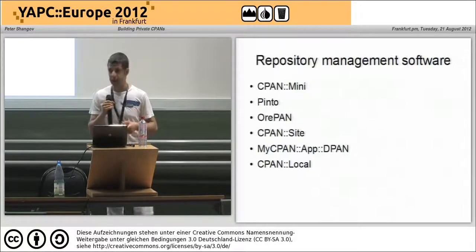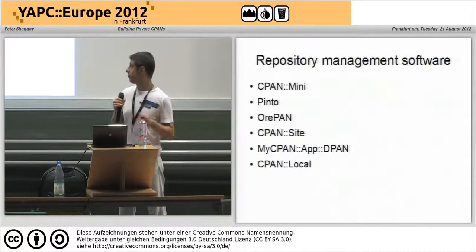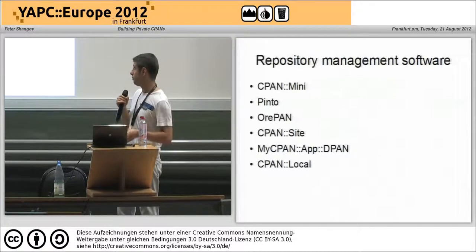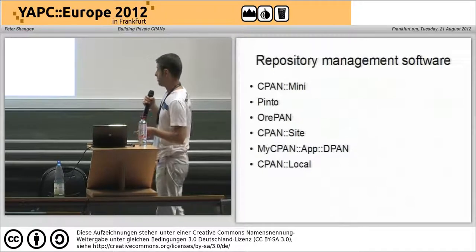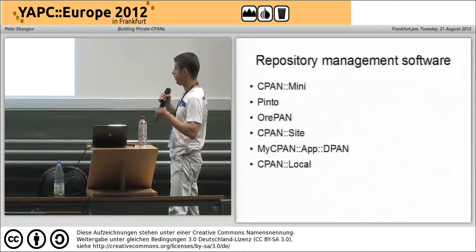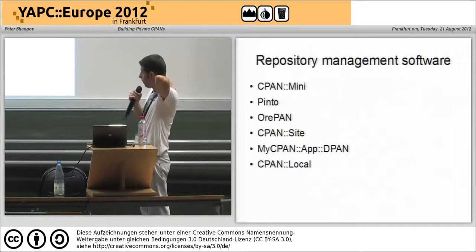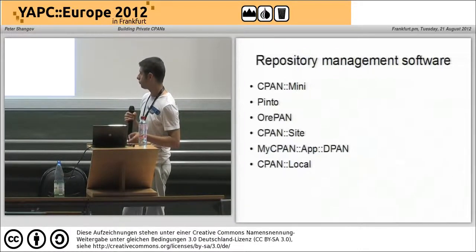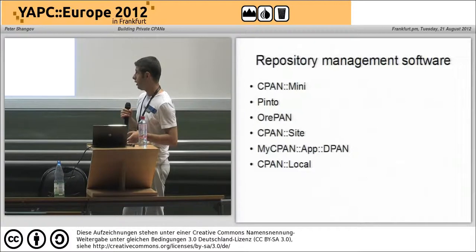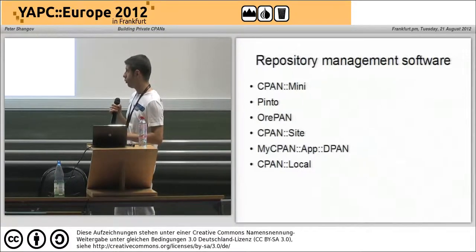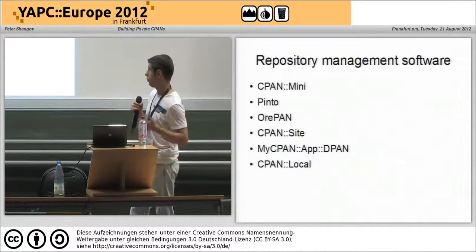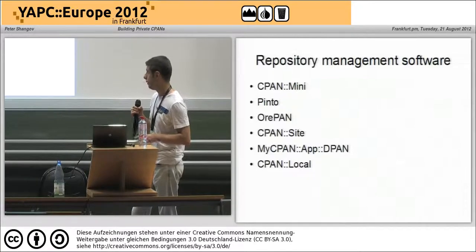Pinto is a new library that's becoming very popular. It's been developed rather rapidly, has plenty of features, and it addresses the more fundamental drawbacks of CPAN mini's design. OPAN, cpansite, and my cpanapp dPAN are older than Pinto, but they aim to solve the same kind of issue. They haven't really gained much traction, they're not very well documented, and they don't provide any unique features on top of what Pinto does, so I'm not going to be talking about them in this talk.